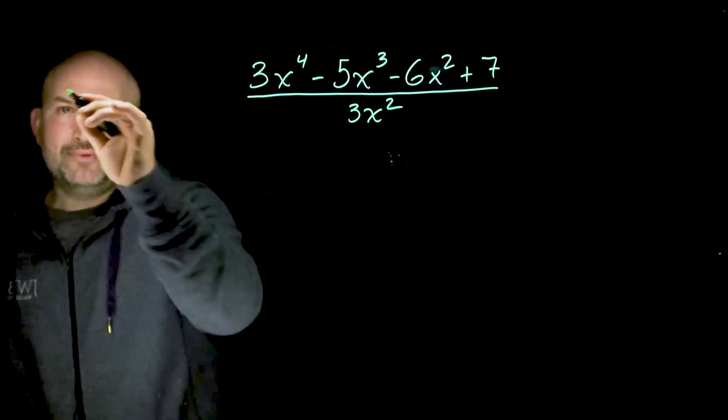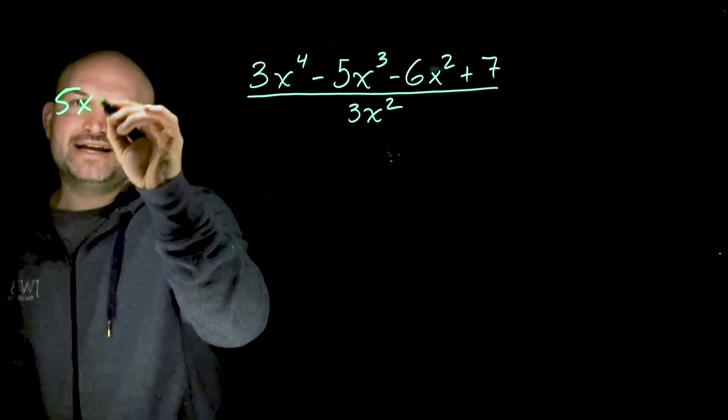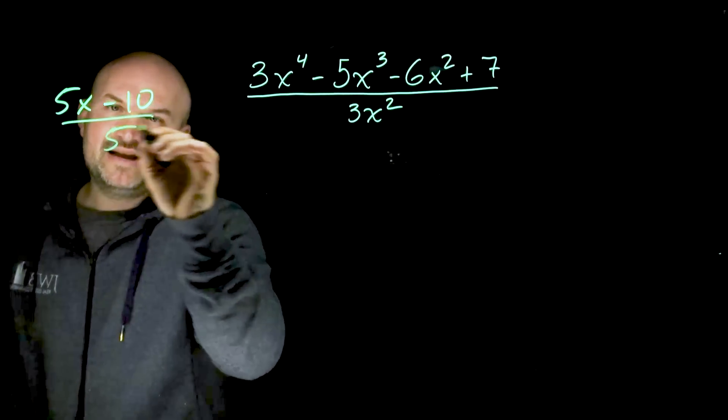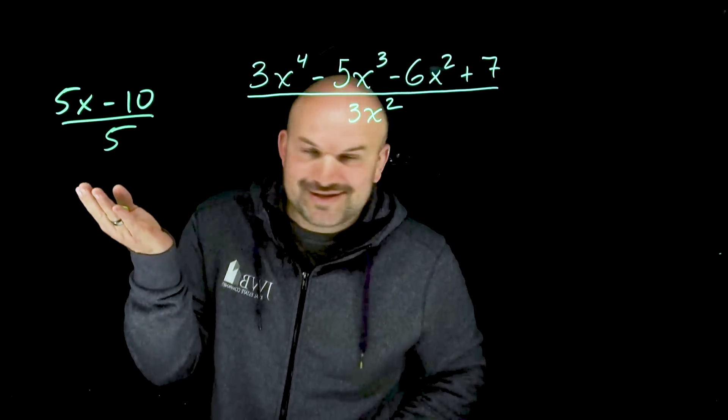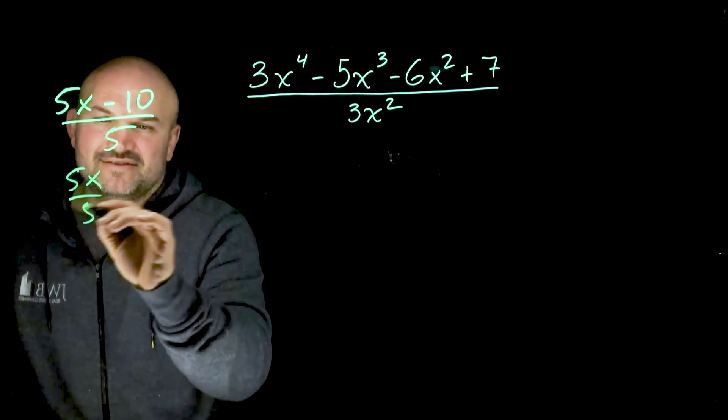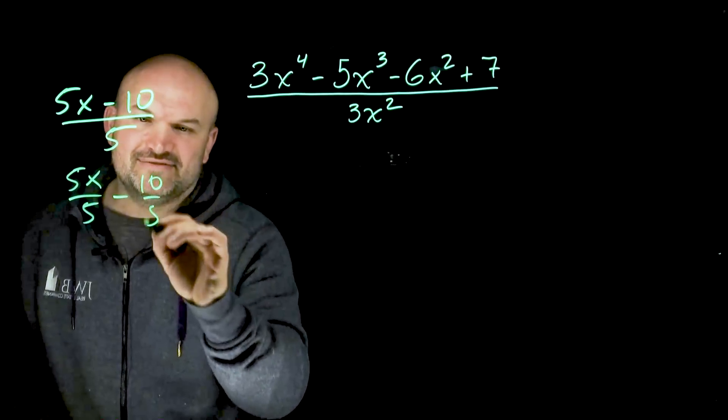If you're not following me, let's just do a quick little example. What if I had 5x minus 10, and I said divided by 5? I could use long division for this, right? Or I could simply just say 5x divided by 5 minus 10 divided by 5.